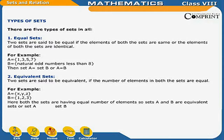Equal sets: two sets are said to be equal if the elements of both sets are the same or identical. For example, A = {1, 3, 5, 7} and B = the set of natural odd numbers less than 8. Then set A equals set B, i.e., A = B.